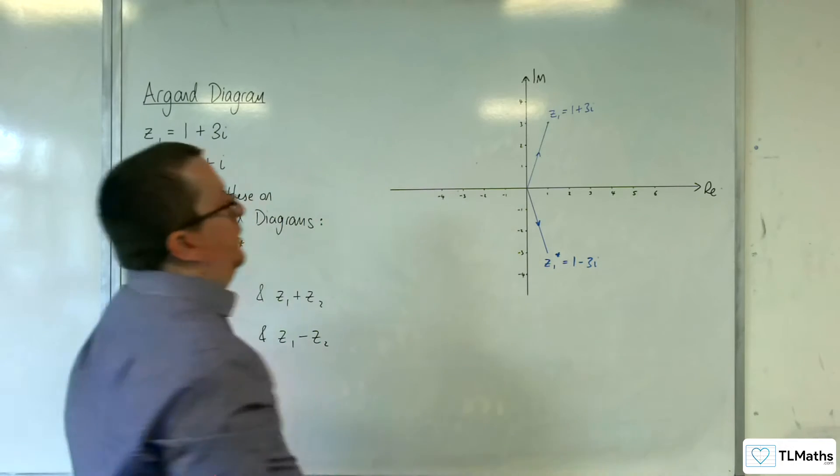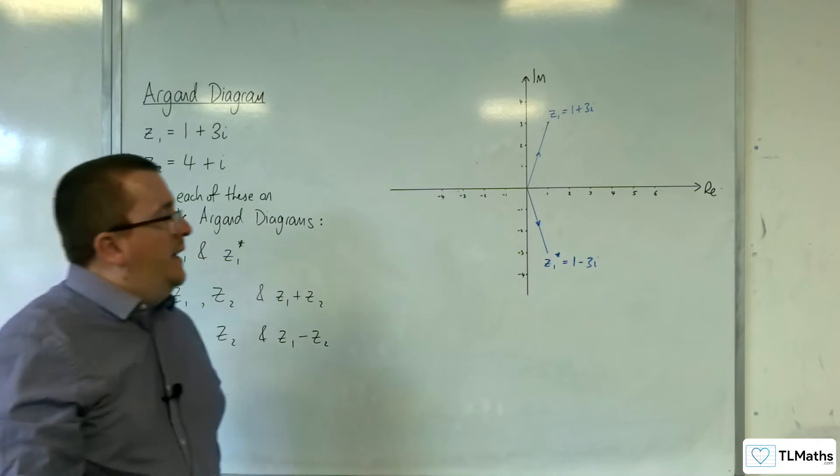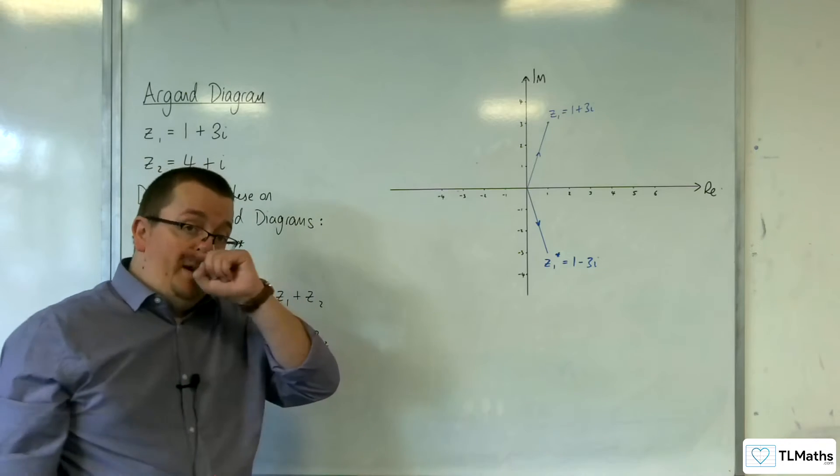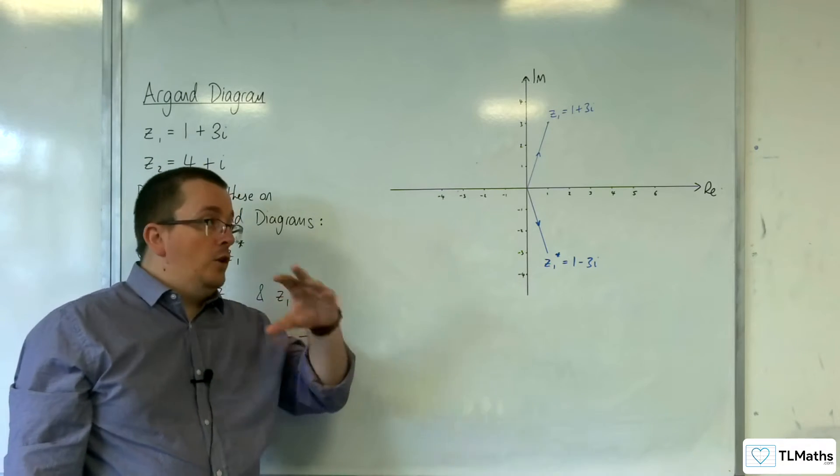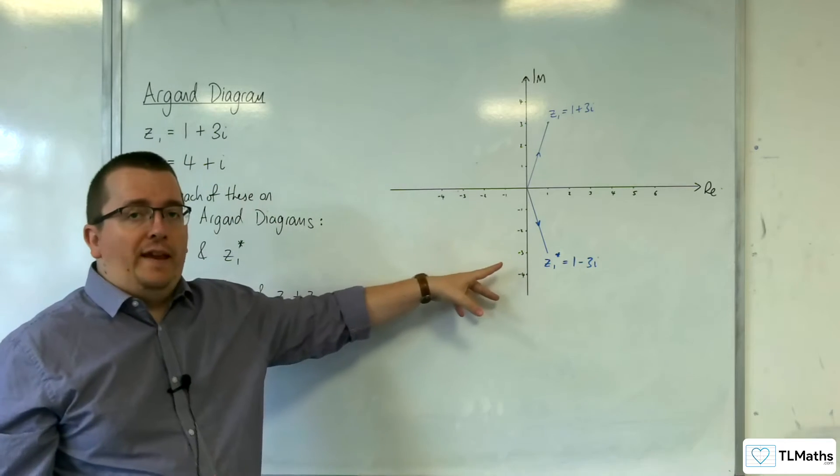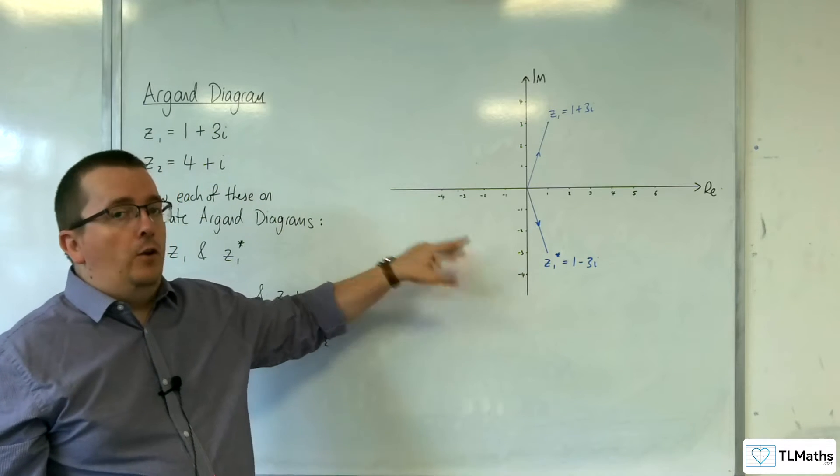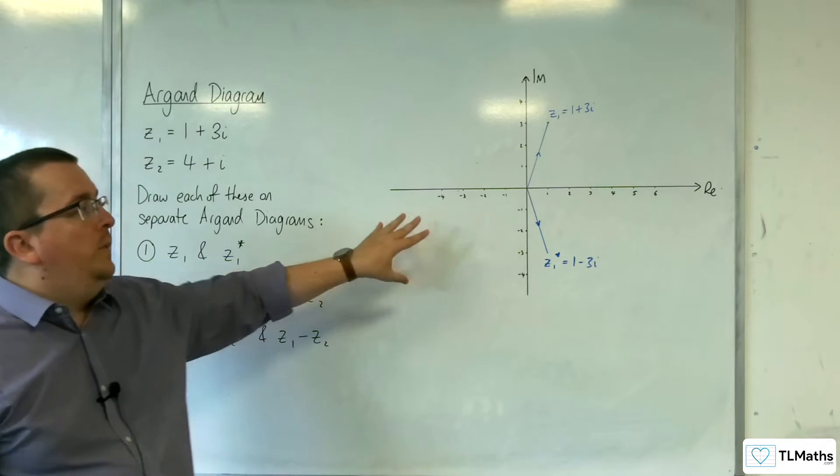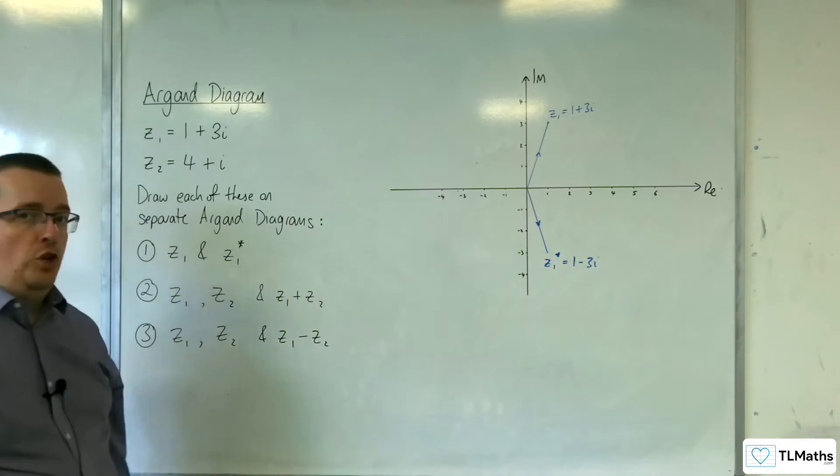Okay. So, what you need to pinpoint here, and what you need to understand, is that a complex number and its complex conjugate will be reflections of one another in the real axis on an Argand diagram. So, that is how you need to visualize them.